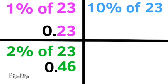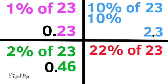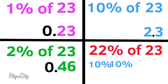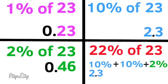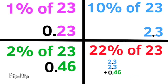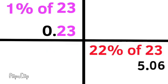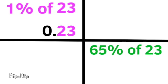Let's find 10% of 23. That's just 10 times smaller than 23, or 2.3. 22% of 23 is 10% plus 10% plus 2%, or 2.3 plus 2.3 plus 0.46, which equals 5.06. 22% of 23 is 5.06.